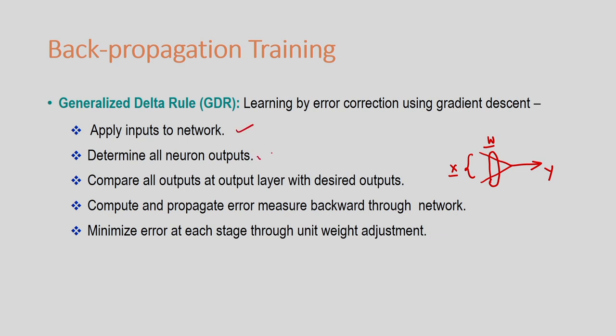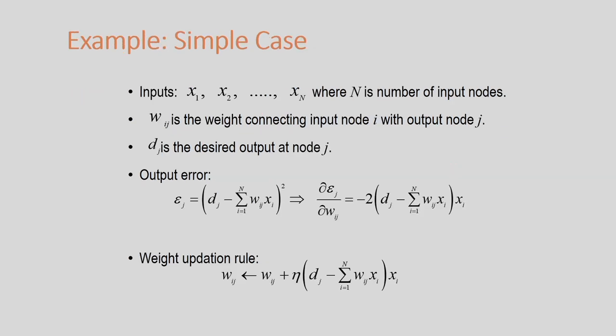The steps are: determine all neuron outputs, compare outputs at the output layer with desired outputs — because we know the desired output, that is the concept of supervised learning. For a particular input X, we know what the desired output is. Compute and propagate the error — the difference between desired and actual output — backward through the network, then minimize the error by adjusting the weights. This process is done iteratively until the convergence condition is satisfied.